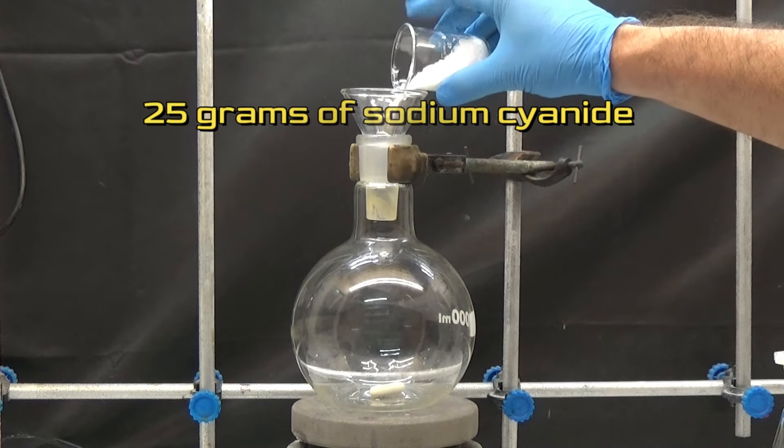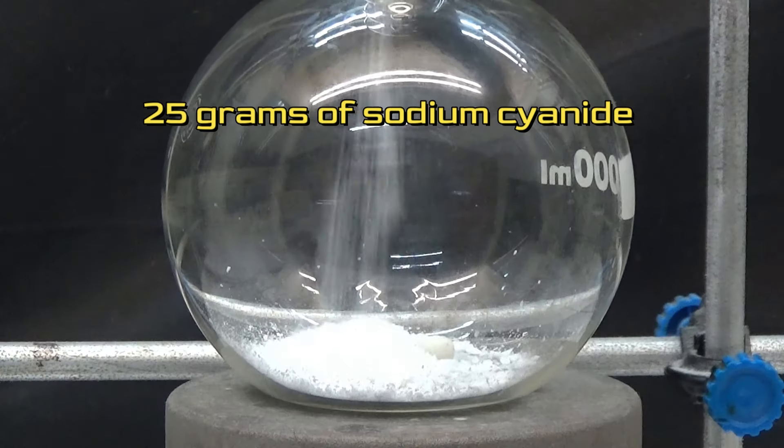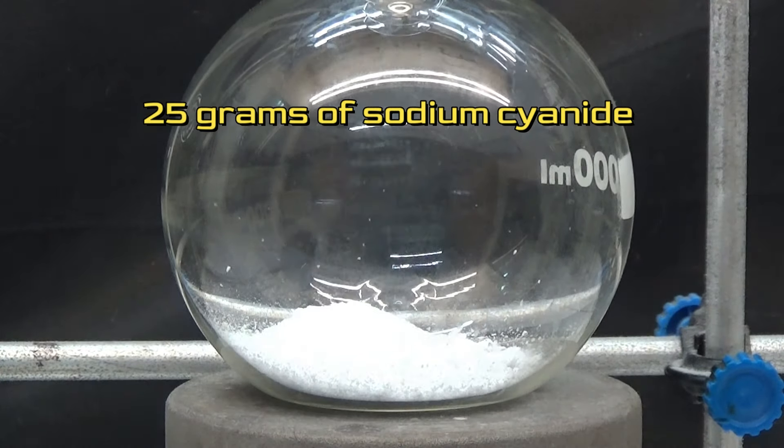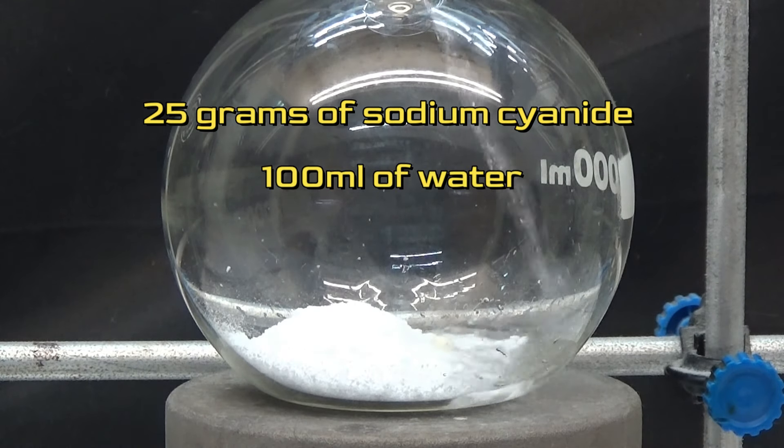To obtain the nitrile, we will put 25 grams of sodium cyanide in a 1000 milliliters flask and dilute it with 100 milliliters of water.